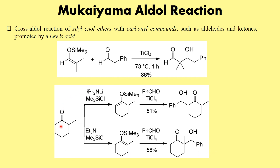A very important feature of this reaction is that we can control the regioselectivity. For example, if I want to bring about a reaction on a specific carbon, I simply use a more hindered base — the hindered base is not going to abstract a proton from the more substituted position but will abstract from the less substituted one. Using LDA gives a kinetically controlled enolate — the least substituted enolate — which forms the corresponding silyl enol ether that on reaction with aldehyde and titanium chloride gives the desired product.